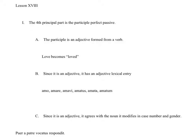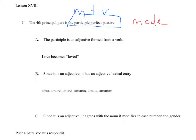Here it is, lesson 18. The book introduces the fourth principal part, which would be identified by you as the participle perfect passive. Mood, tense, and voice. The fourth principal part is the participle perfect passive. The word mood is really just the word for mode in an old-fashioned pronunciation, and the participle is the mode of the verb when it is made into an adjective. So the participle is an adjective. That's really all you need to know.